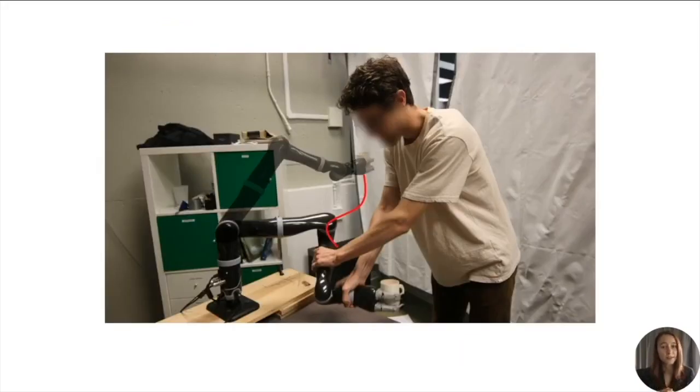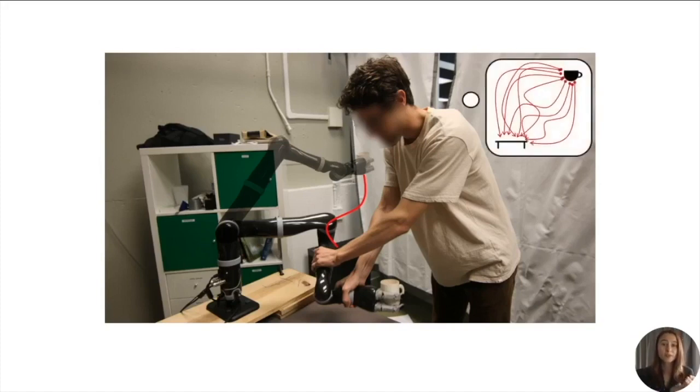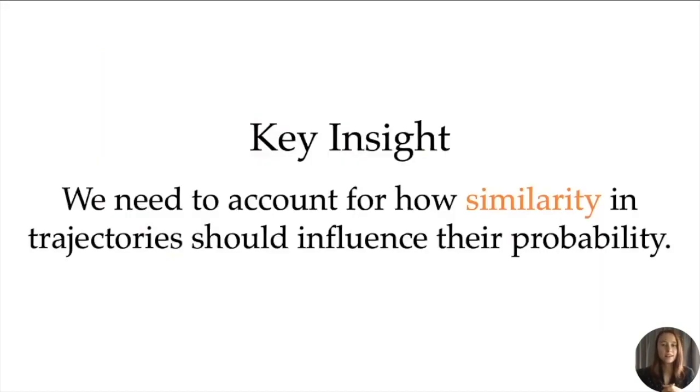Now, in continuous trajectory spaces, which are typical to robotics problems, we don't really have duplicate options, but we have a continuum of options with varying degrees of similarity to each other. Nothing is a duplicate, but everything is more or less similar to everything else. This is why we think that the Boltzmann model is a naive generalization of the Luce Axiom to continuous spaces. Our insight is that we need to rethink how to generalize the Luce Axiom to trajectory spaces, and account for how similarity in the trajectories should influence their probability.